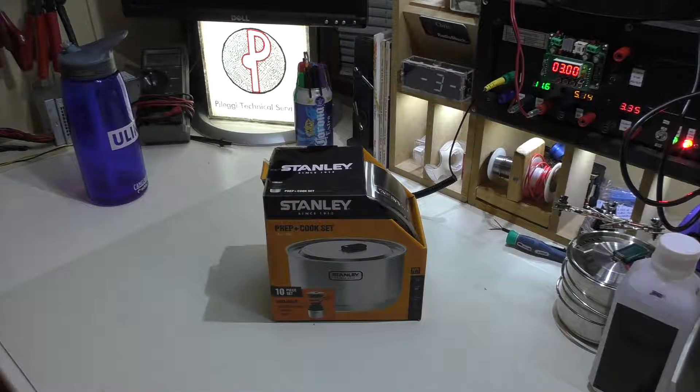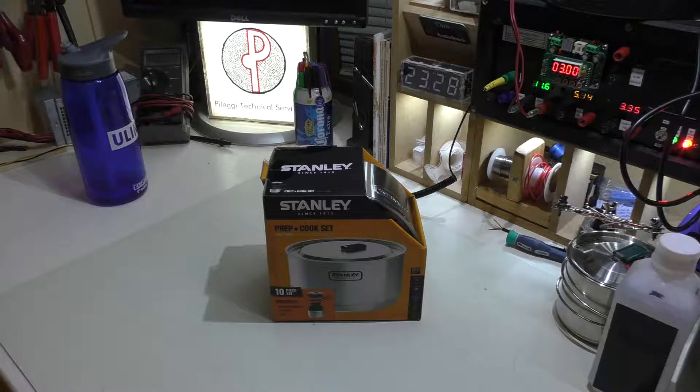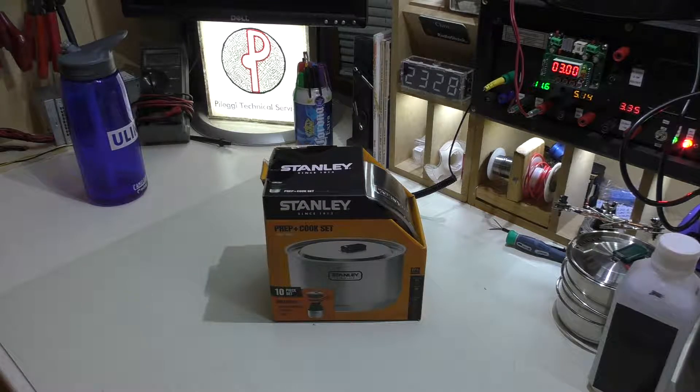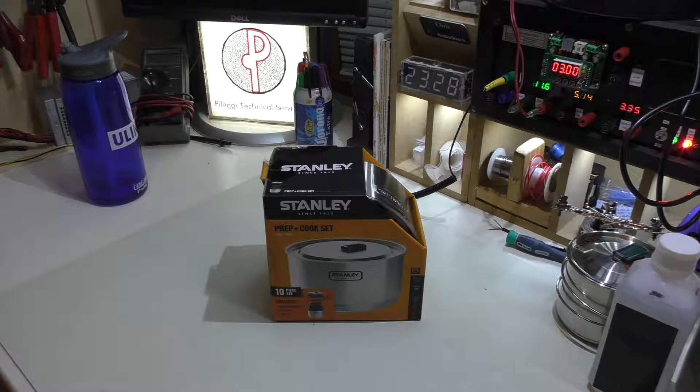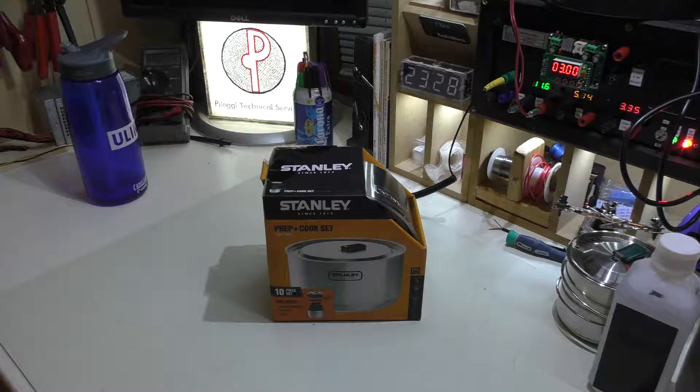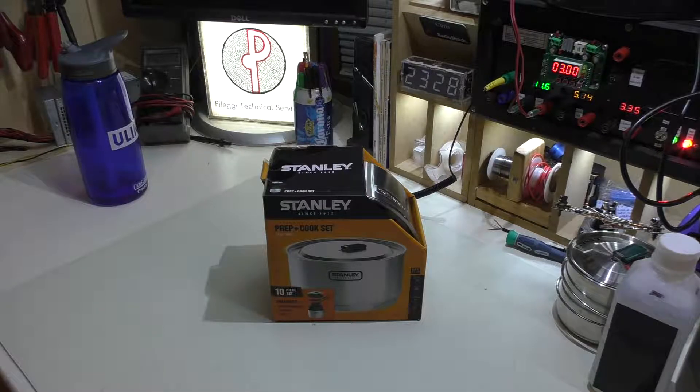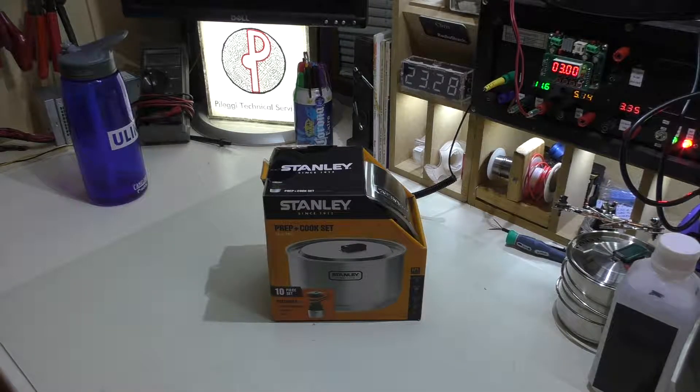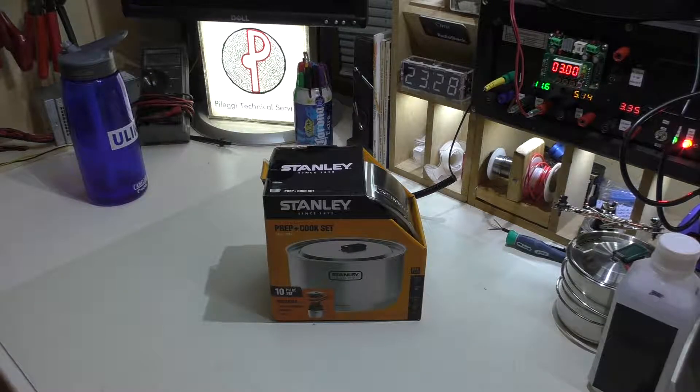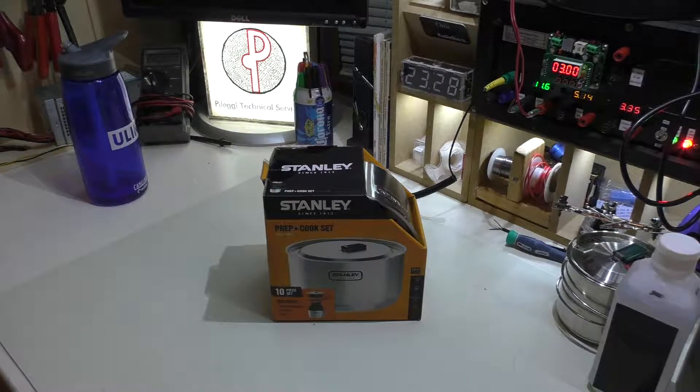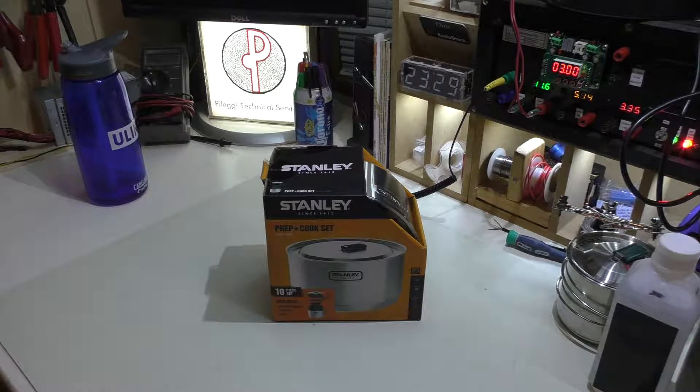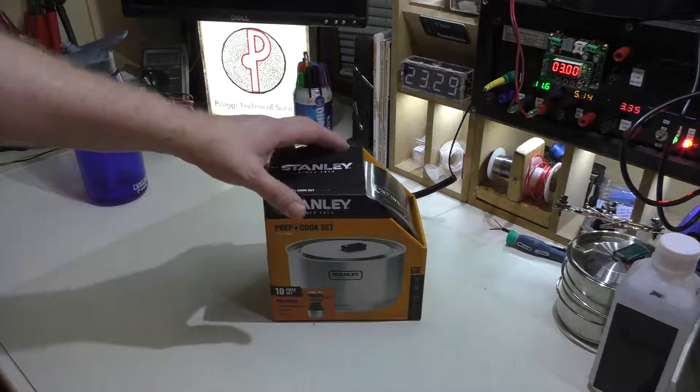So with that, I'm going to clean off the desk here. We're going to get into the second Stanley set here. And now we're looking at the Stanley Prep + Cook Set. Now I picked this one up in particular because I found that in some situations, the smaller 24 ounce system wasn't quite big enough. Plus again, being modular, this particular one came with some pieces that the other one didn't, and adding that to what I already have will become a full camp kitchen. This had some extra things that I liked.